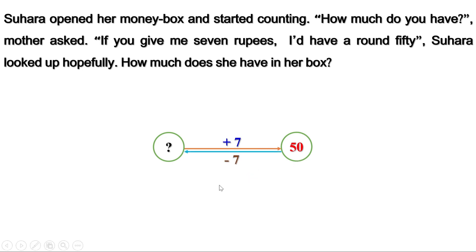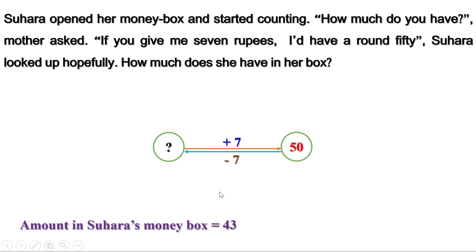We will get the amount with Suhara at the beginning. What is 50 minus 7? It is 43. So the amount in Suhara's money box is 43. Now you can check: 43 plus 7 is 50.